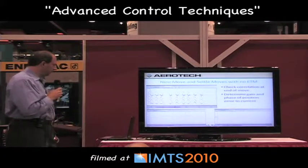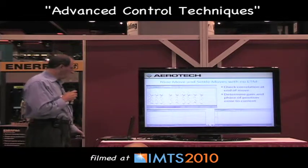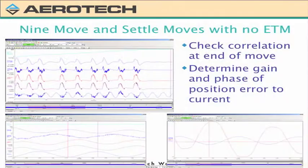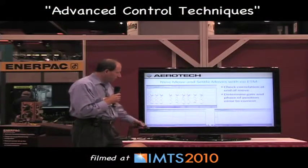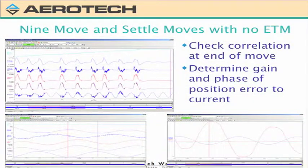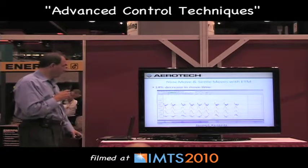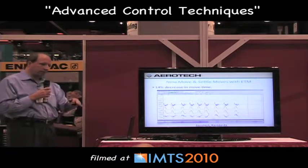Here's an additional ETM example. I do nine move and settles with no ETM in the system. To tune this, I look at the end of one move and overlay the current and position error signals. They appear out of phase, and I take the ratio of the peaks to get the gain to insert into the loop. Making the same nine moves with ETM, I've increased the production rate of this machine by 14 percent simply by mounting a sensor package on the base and inserting it appropriately into the controller.